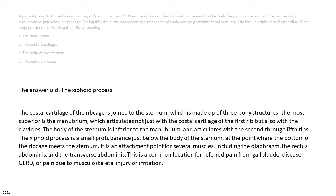The body of the sternum is inferior to the manubrium and articulates with the second through fifth ribs. The xiphoid process is a small protuberance just below the body of the sternum, at the point where the bottom of the ribcage meets the sternum. It is an attachment point for several muscles, including the diaphragm, the rectus abdominis, and the transverse abdominis.